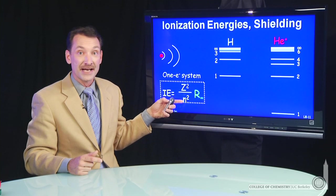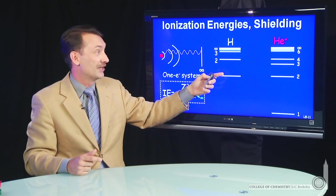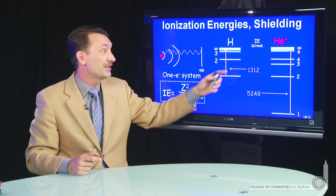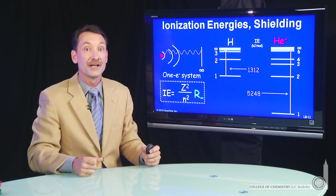So if you're in the ground state, n equals 1. To ionize hydrogen, we saw that took ultraviolet radiation. And the radiation, 1,312 kilojoules per mole to ionize a mole of hydrogen atoms.